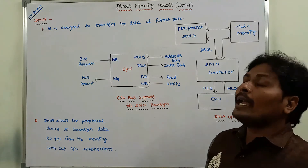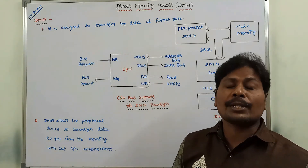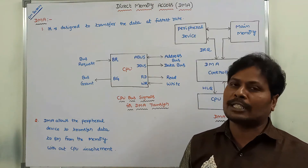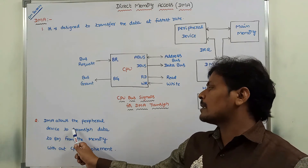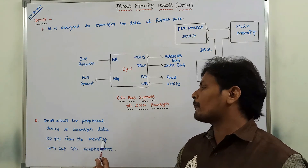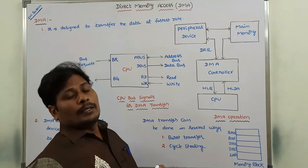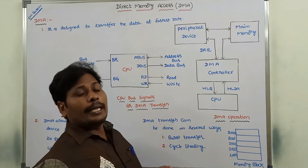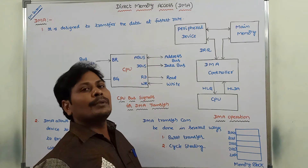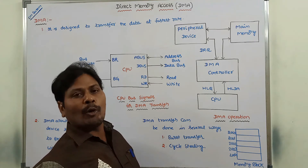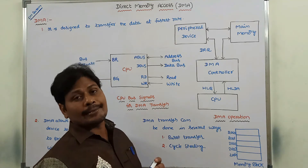In this way, DMA operation is performed. Mainly, DMA is used to transfer data at the fastest rate without involvement of the CPU. DMA allows the peripheral device to transfer data to or from the memory without CPU involvement. DMA transfer can be done in several ways; among them, two are more important: burst transfer and cycle stealing.